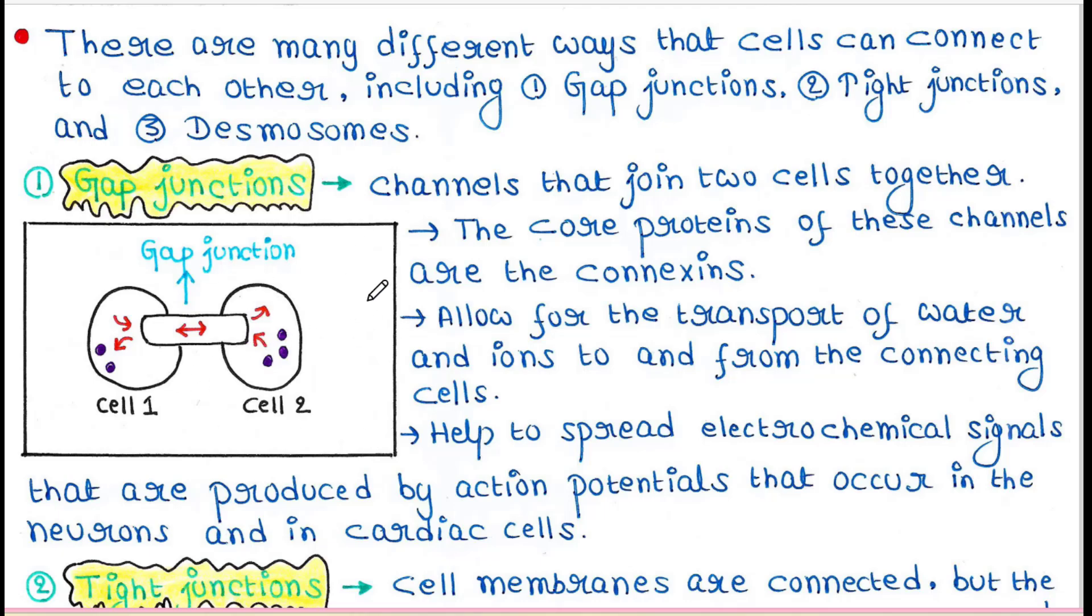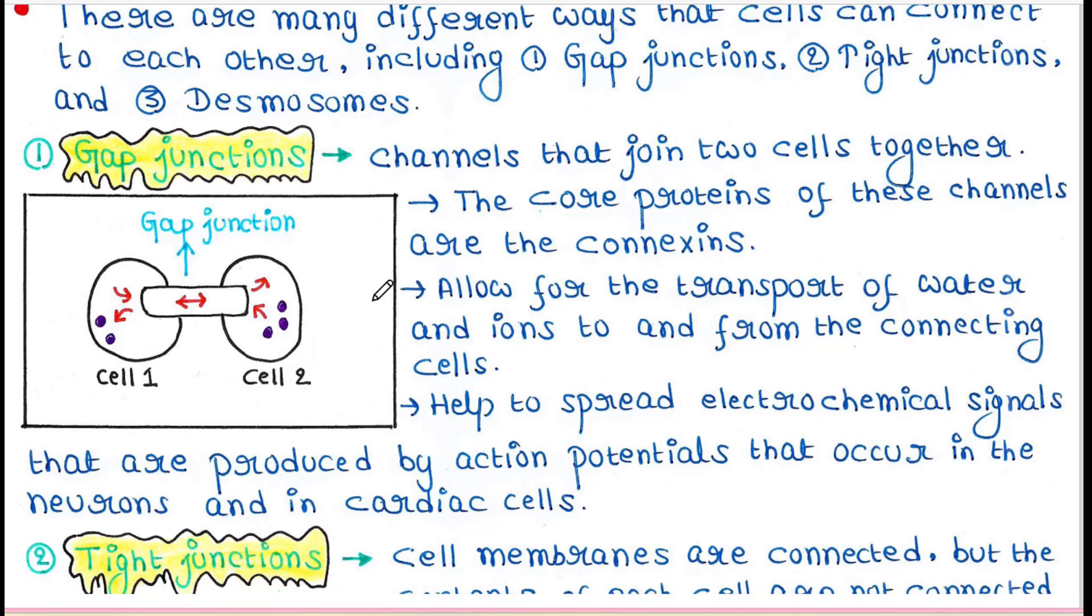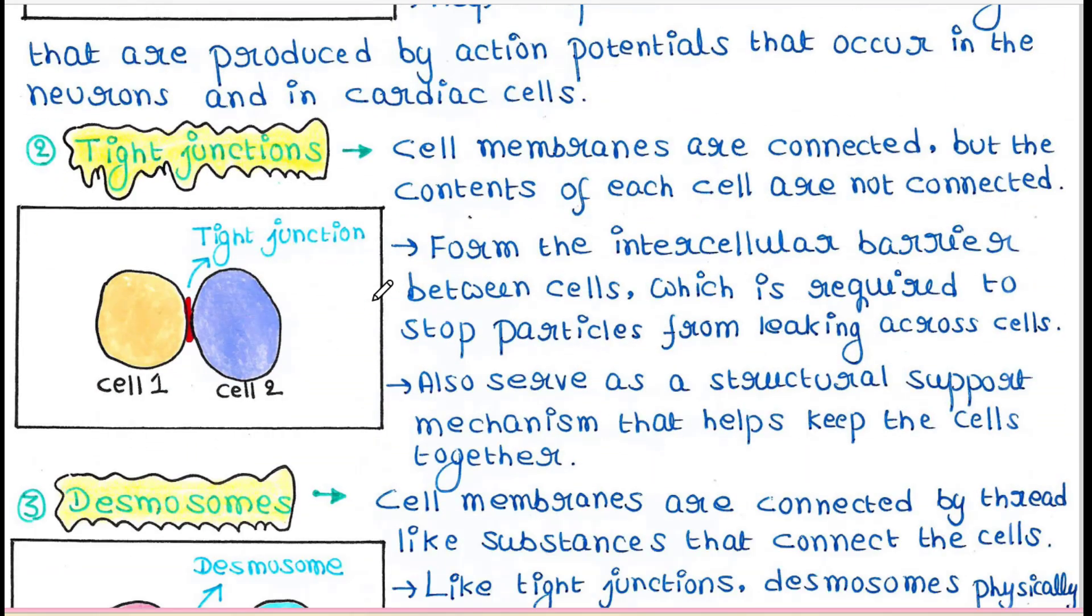Next is tight junction. Cell membranes are connected, but the contents of each cell are not connected. You can see here two cells. In between them we can see the tight junction.